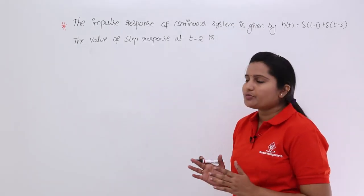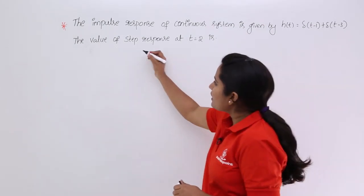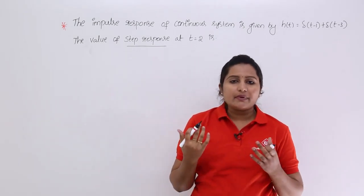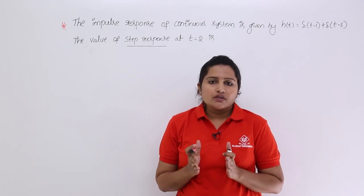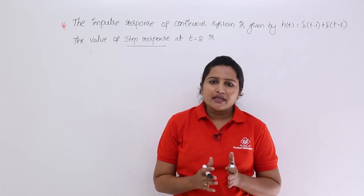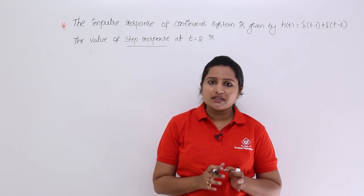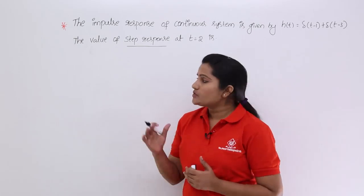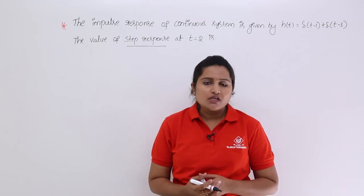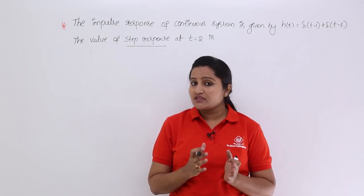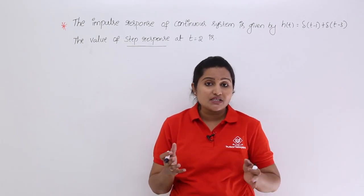What we need to find is the value of the step response at t = 2. Coming to step response — what is meant by step response? Whether it is input or output, we need to know. As I mentioned at the very beginning of signals and systems: system excitation is nothing but input, and response is nothing but output. So, step response is an output — they are asking for the output of the system.